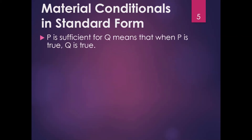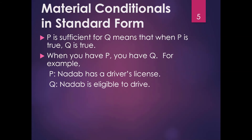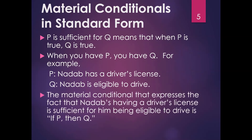Material conditionals in standard form make use of the terms 'sufficient conditions' and 'necessary conditions.' We say P is sufficient for Q, meaning when P is true, then Q is true. For example, if P is 'NADAB has a driver's license' and Q is 'NADAB is eligible to drive,' then having a driver's license is sufficient for being eligible to drive. The material conditional expressing this is: if P, then Q.